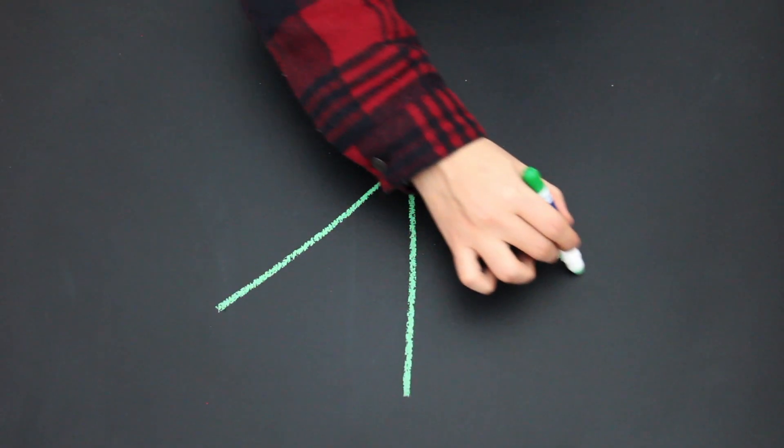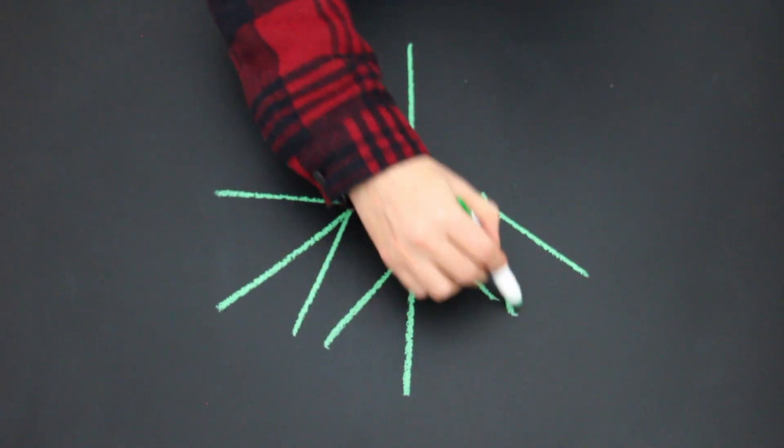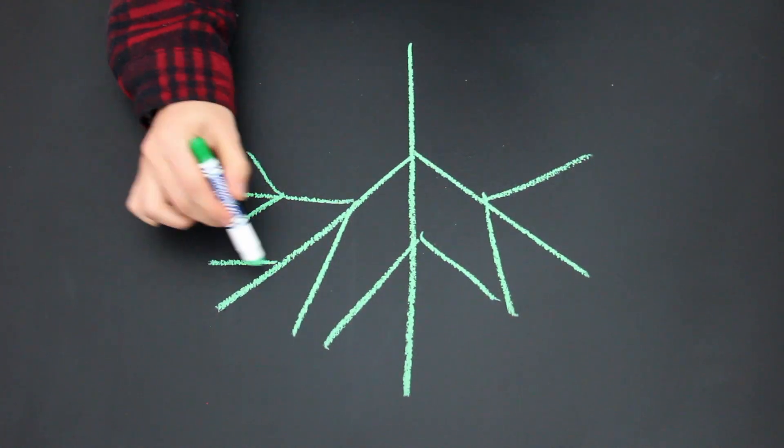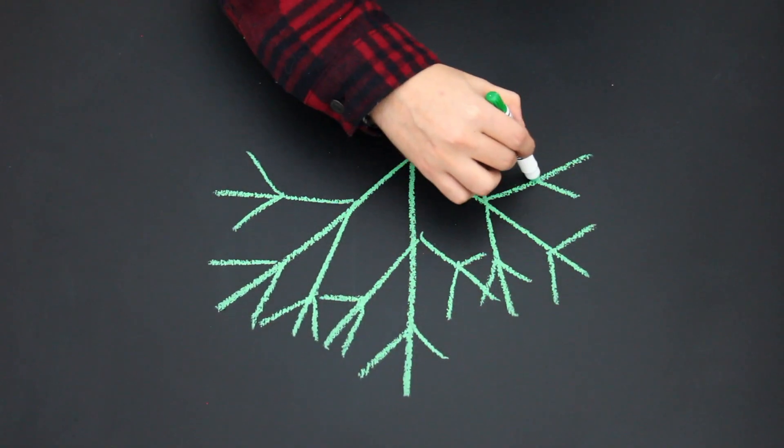What's a fractal? A fractal is a never-ending, self-similar pattern that repeats itself on different scales, like this branching fractal shown here.